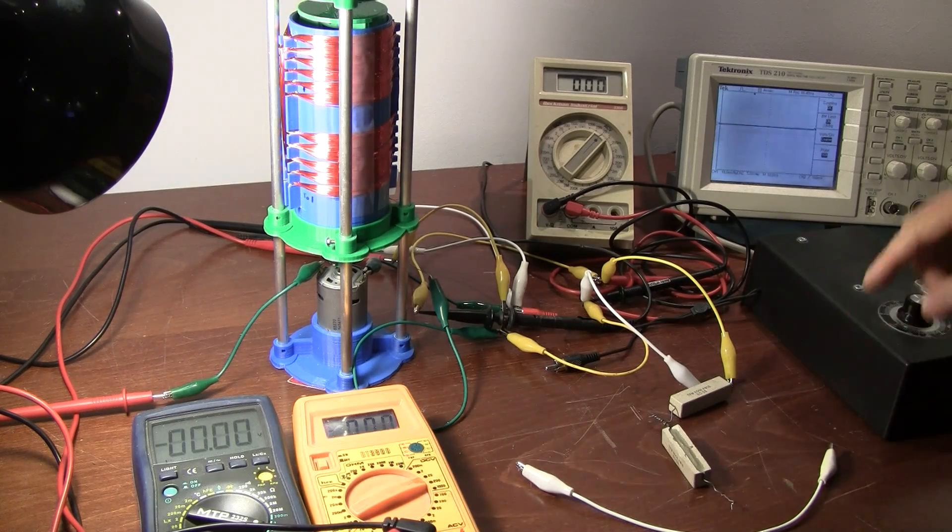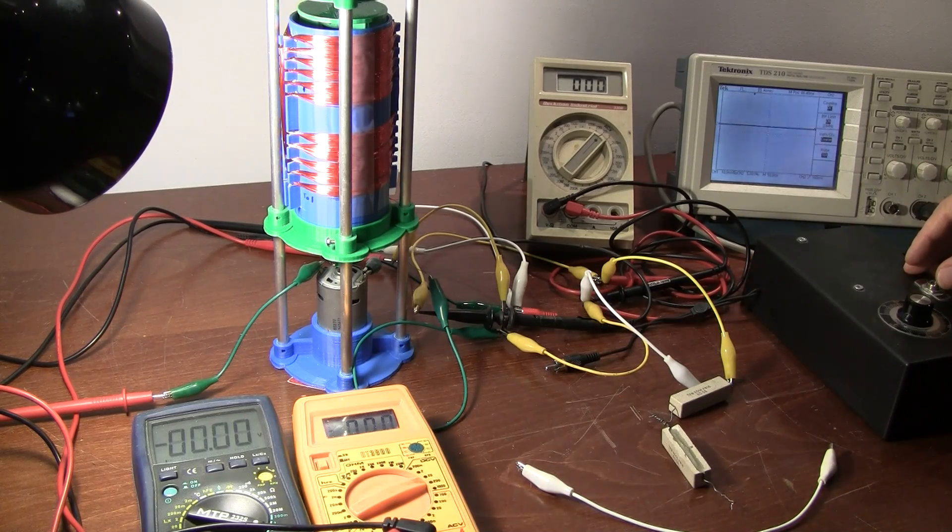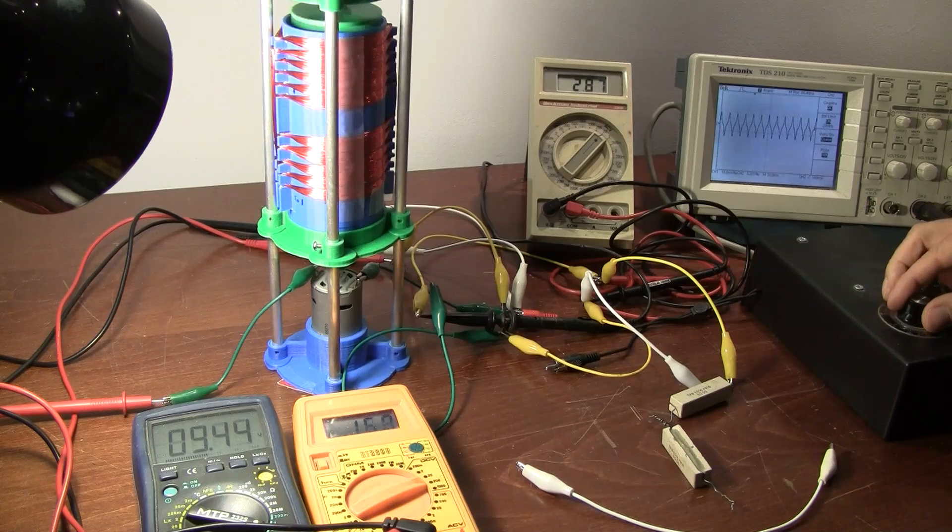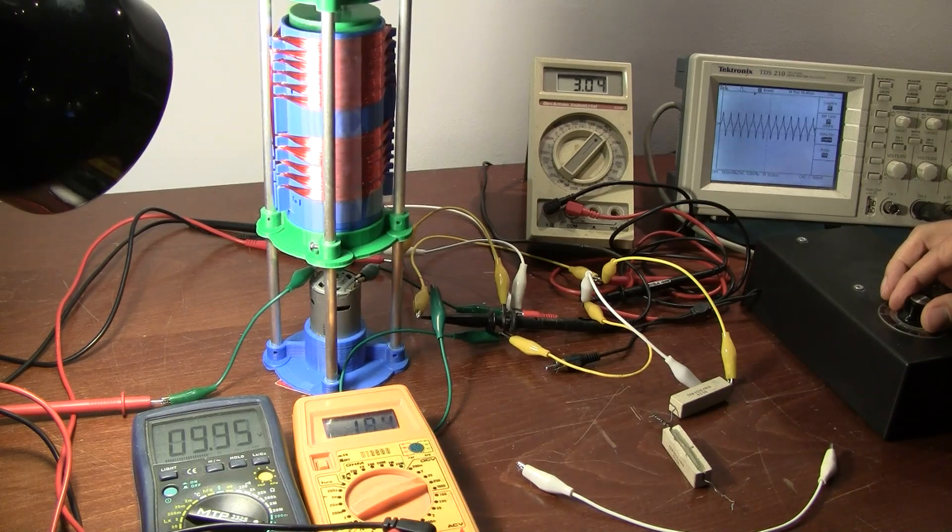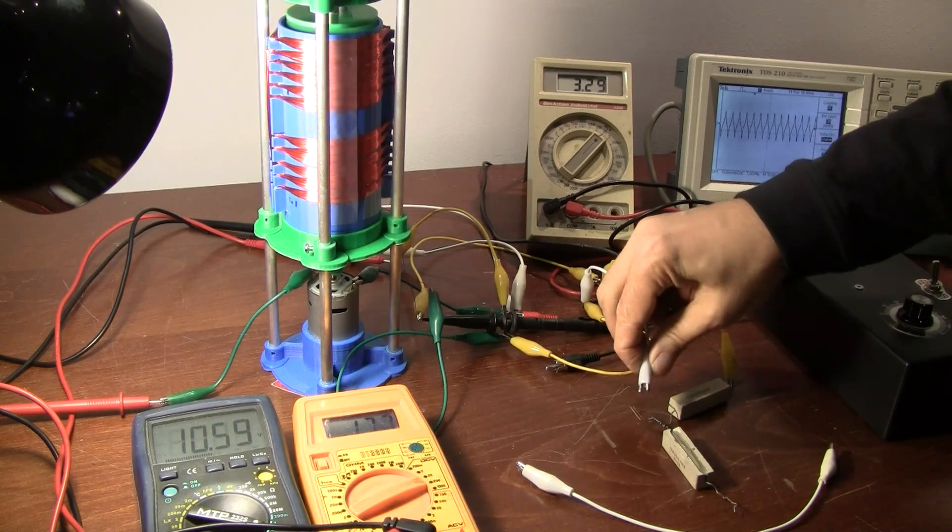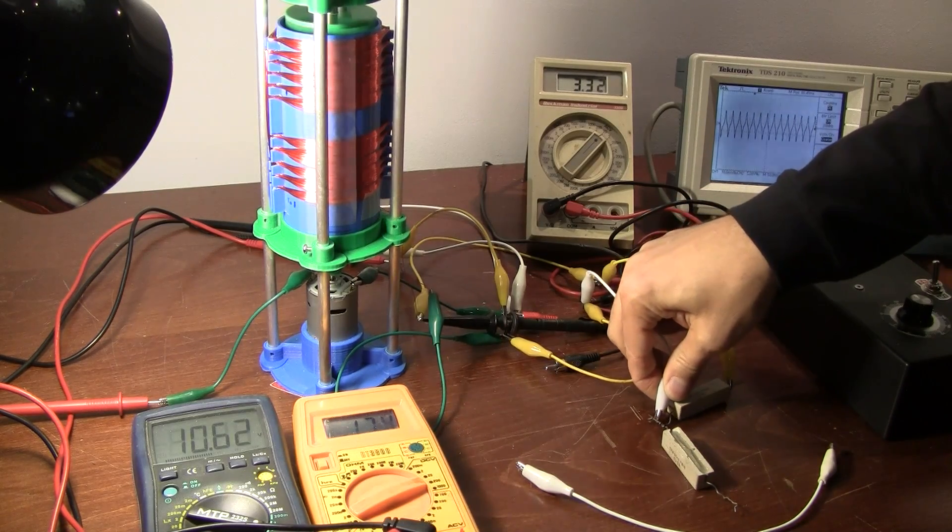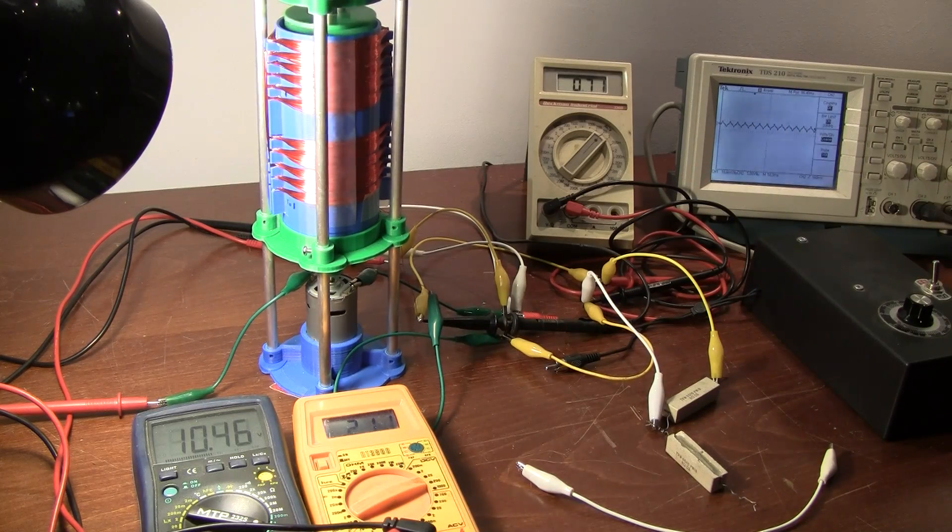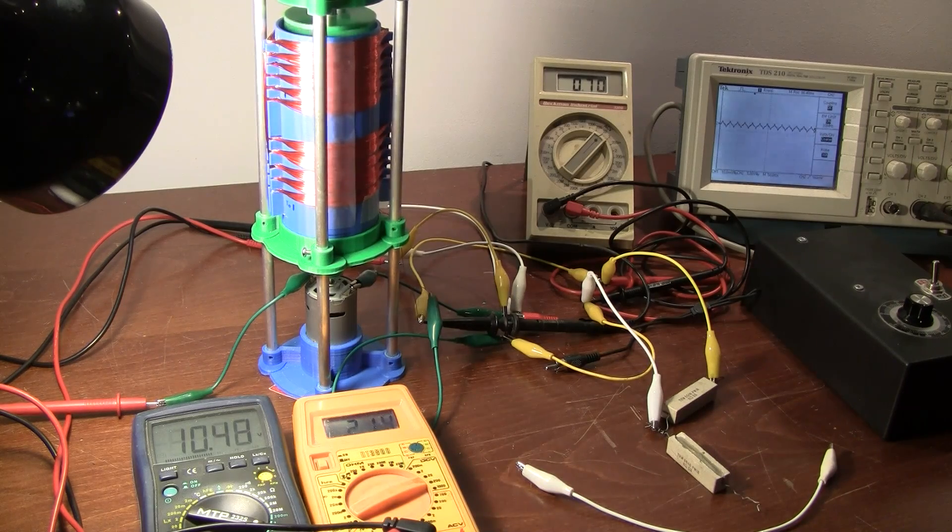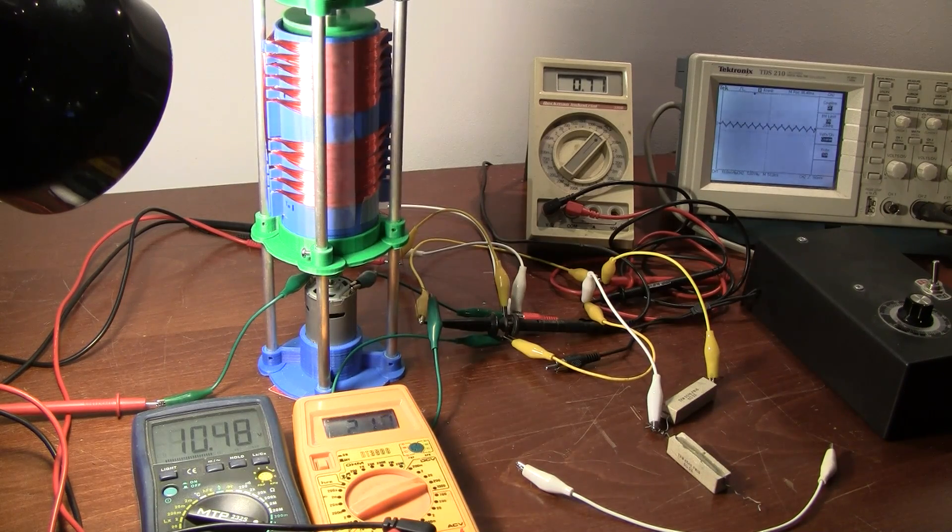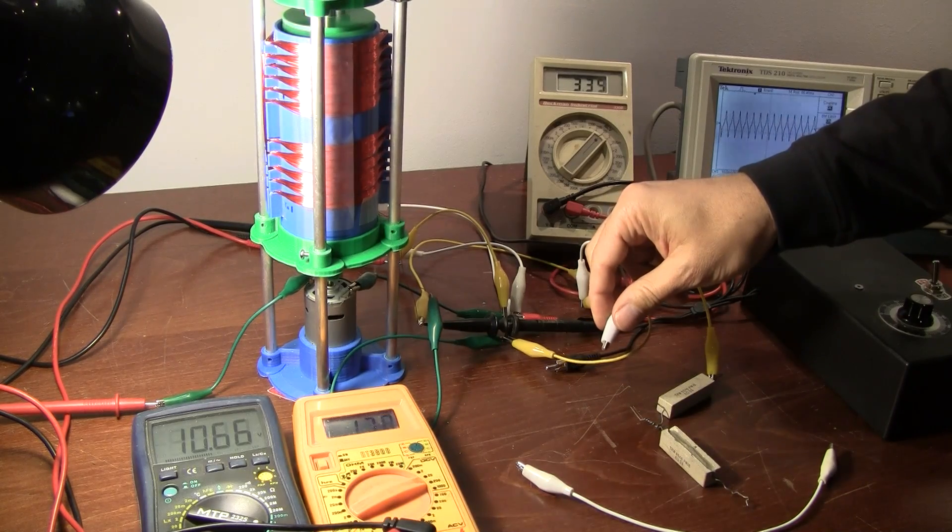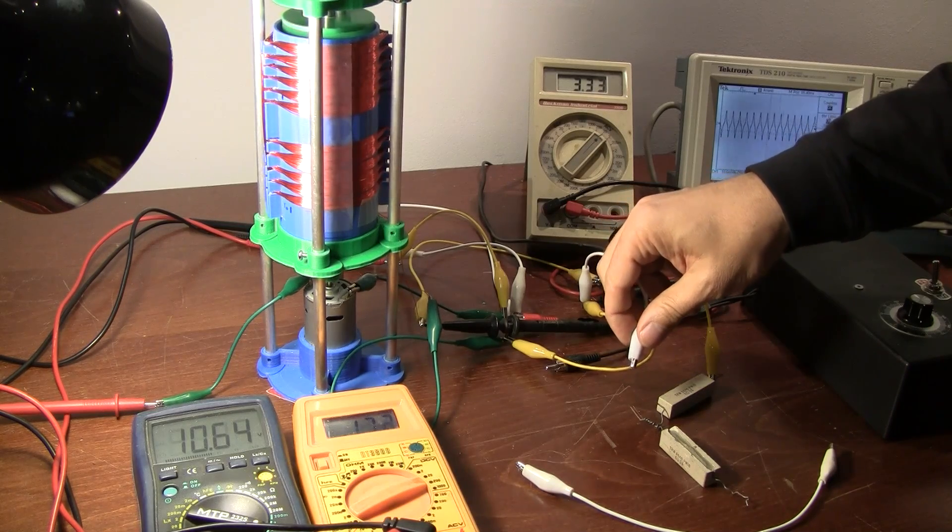And we're going to load it with this 6 ohm resistor and we're going to see what happens to the power. So we've definitely loaded it down. The motor slowed down and took more current and it speeds up when the load is removed.